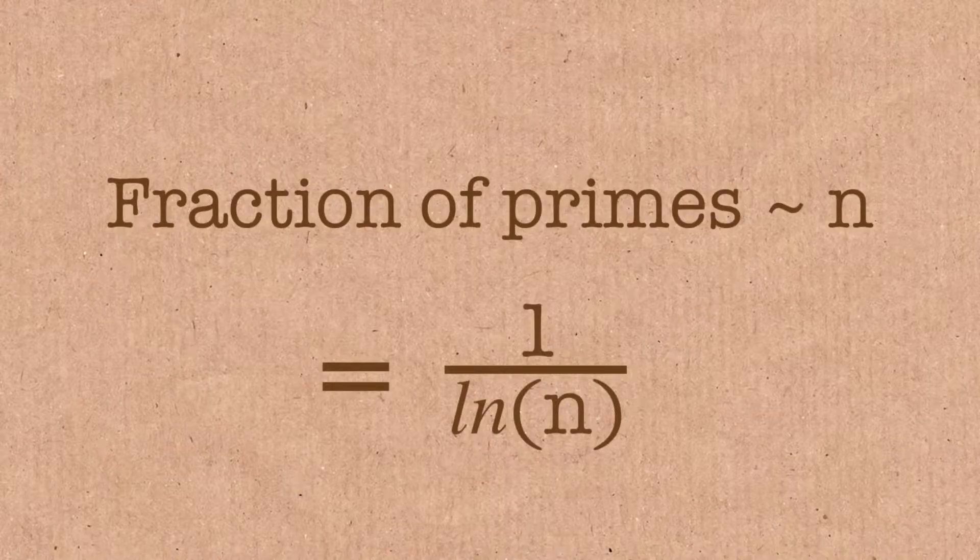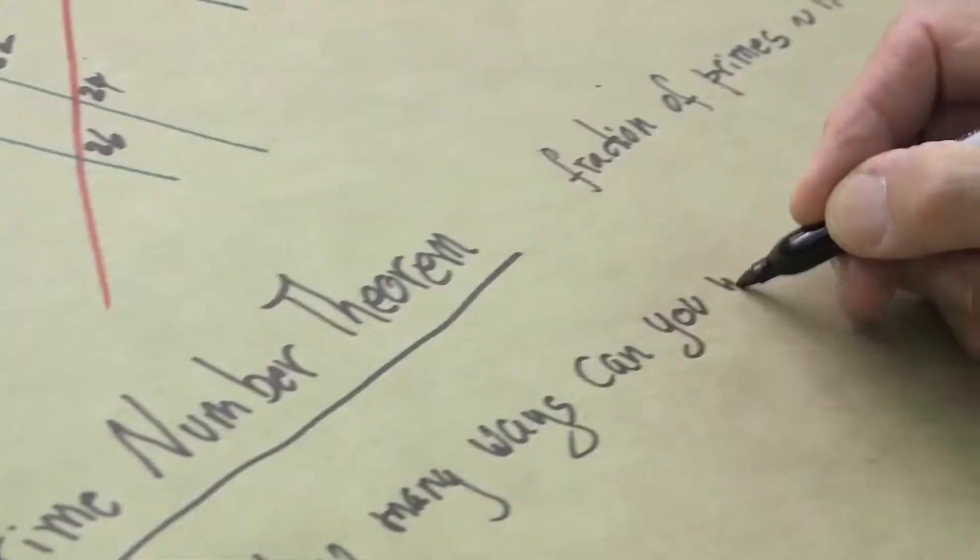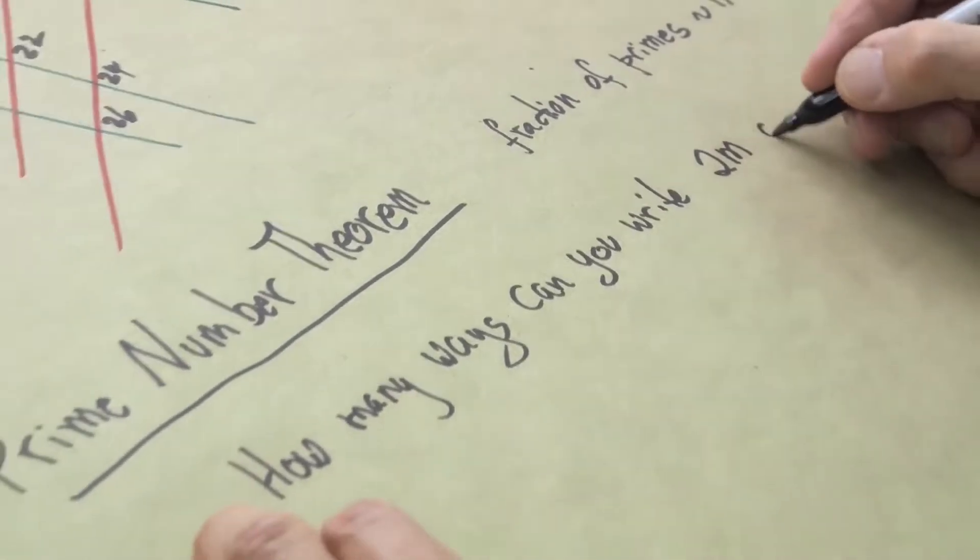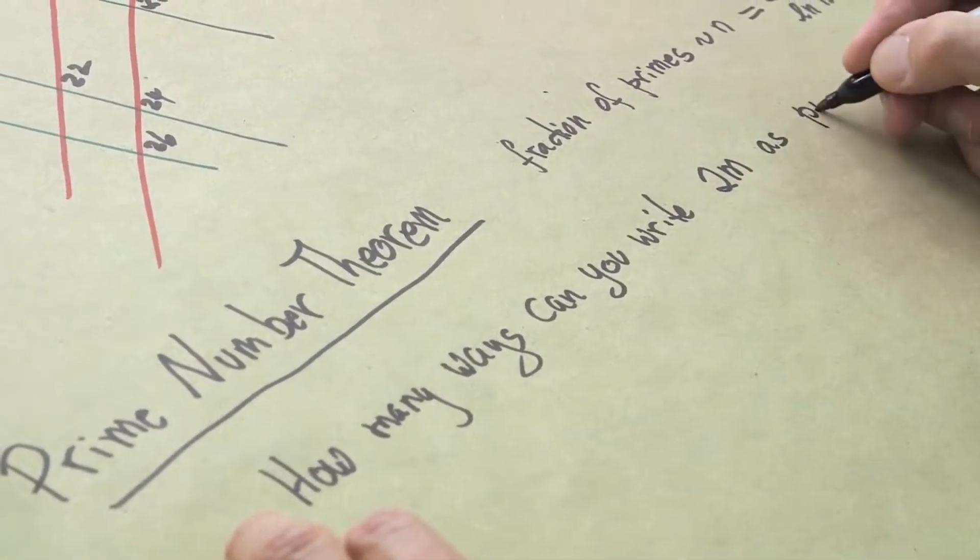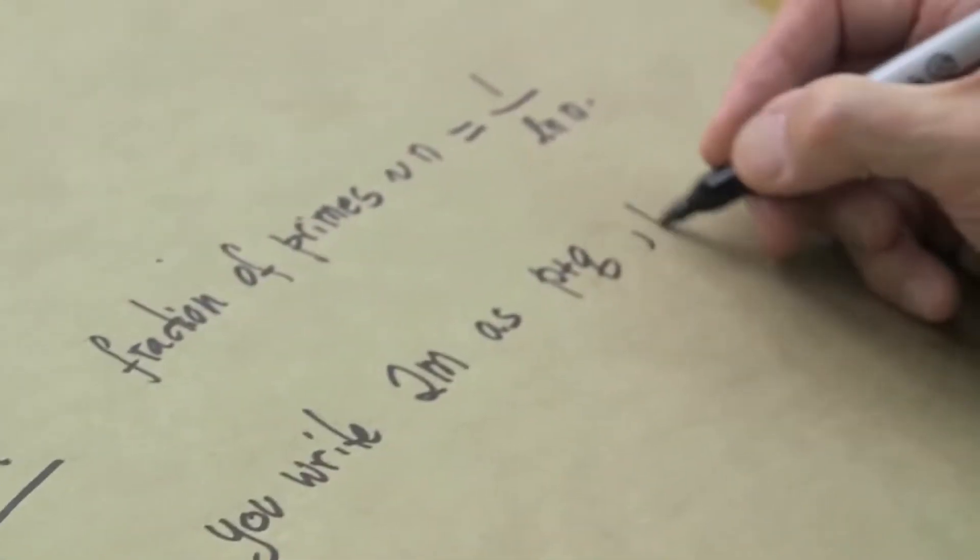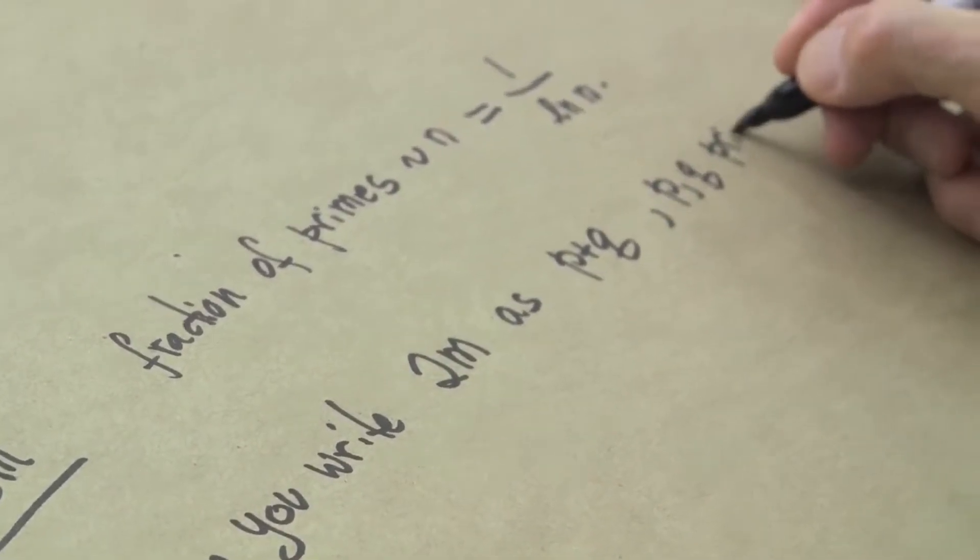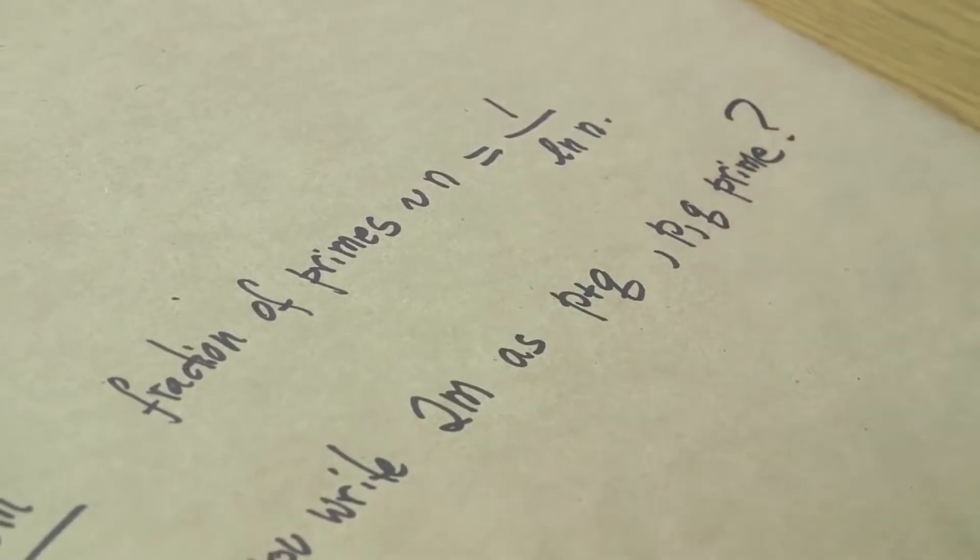So using that, we can estimate the number of ways to write a given number n, or 2n, let's say, as the sum of two primes. Let's use a different number, 2m. So how many ways can you write 2 times m? That's an even number, as p plus q, where p and q are prime. That seems pretty mysterious if you just, if you don't know anything about it, but it's easy to analyze.